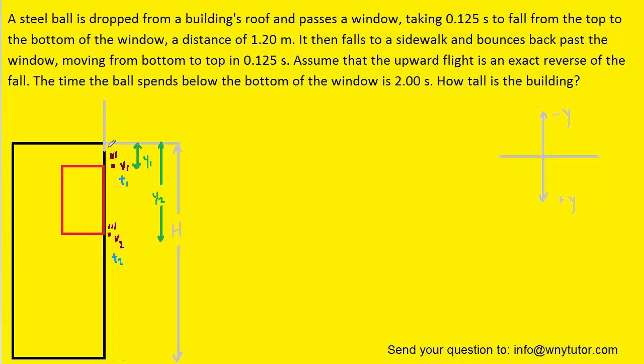So we have the building and this red colored window. The height of the building we have denoted as capital H. We have also noted the distance from where the object is dropped to the top of the window as being Y1 and the distance to the bottom of the window as being Y2. And at those two points, the top and the bottom of the window, we have a velocity and a time. We'll want to take note that we are calling the downward direction as being positive Y and the upward direction as being negative Y.